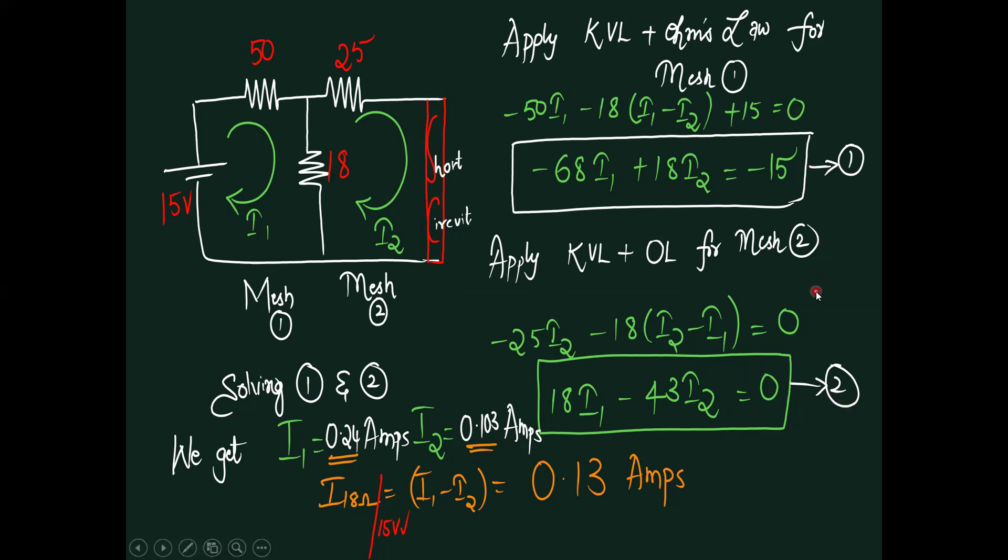Solving these two equations, we get the value of I1, 0.24, I2, 0.103. But you have to find the current across 18 ohms, that is the difference of these two currents. If and only if the condition 15 volts is only in active mode, no other source is in active mode there, we get a value of 0.13 amperes.